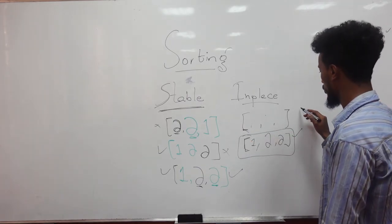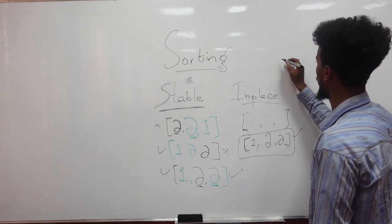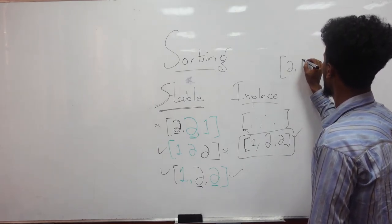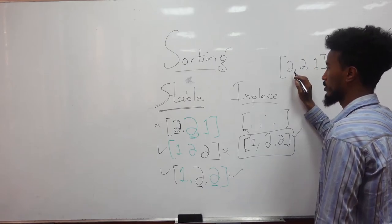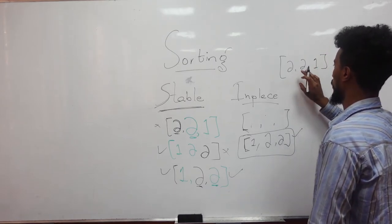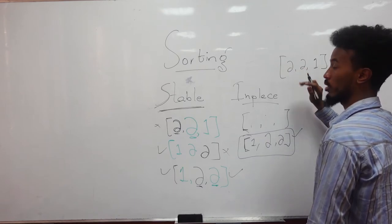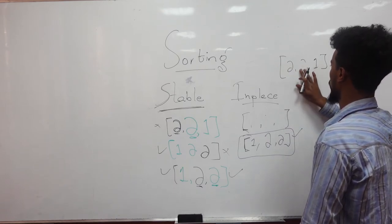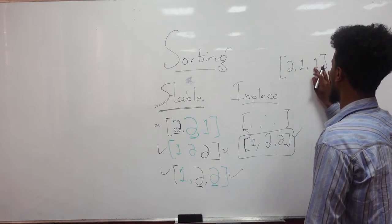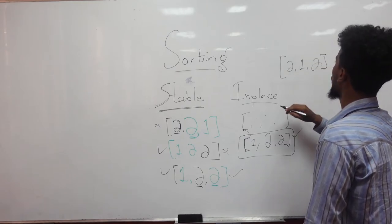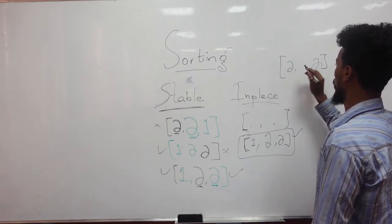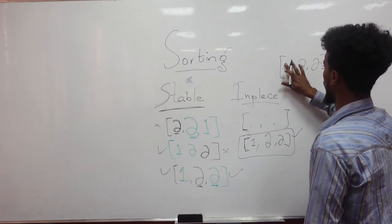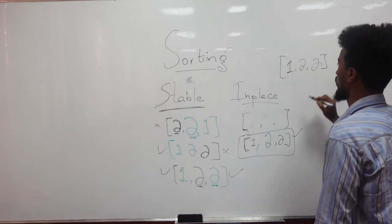And another way of sorting it is, let's say if I have two, two and one, I can swap the values. Let's say, this two and two are okay. Two and one are not okay. Swap them. Then the next iteration, one and two are not okay. We swap them. And finally, the array is sorted.